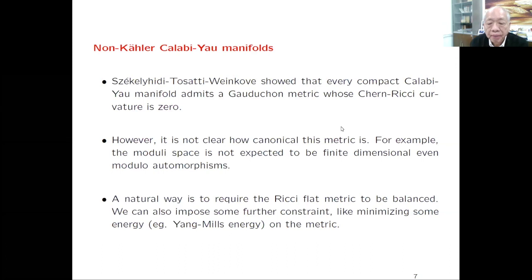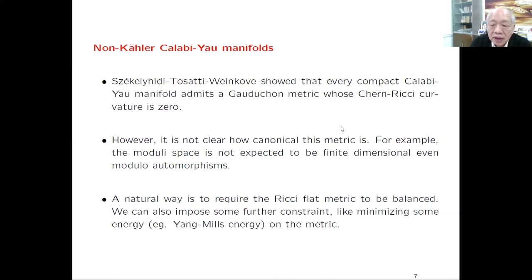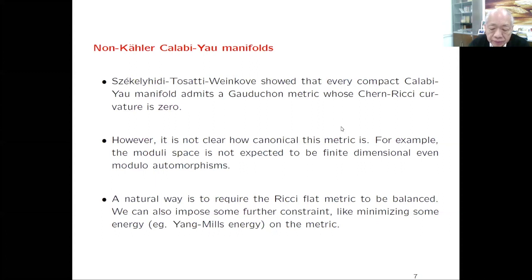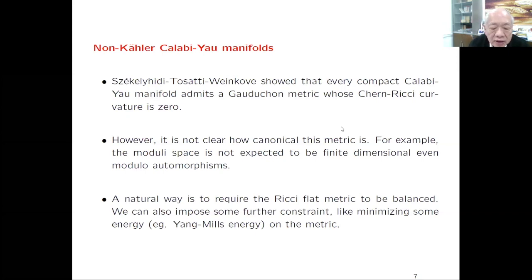So every manifold with a holomorphic n-form admits such a Chern-Ricci-flat metric. However, it is not clear how canonical this metric is. In the case of the Calabi-Yau metric, it is canonical because within the Kähler class there is only one metric of that type. But once you relax to a non-Kähler metric, it is almost surely not canonical in the sense that the moduli space is infinite-dimensional. A more restrictive condition would be requiring the Ricci-flat metric to be balanced, so that alpha to the power n minus one is closed.